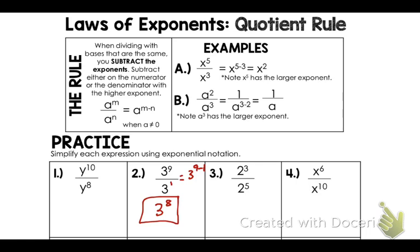Now let's look at number three: two to the third power over two to the fifth power. Because it's quotient rule, you subtract, but my highest power is at the bottom, so I do two to the fifth power minus three. The top simplifies to one, leaving me with one over two to the fifth power minus three — so your final answer is one over two to the second power.